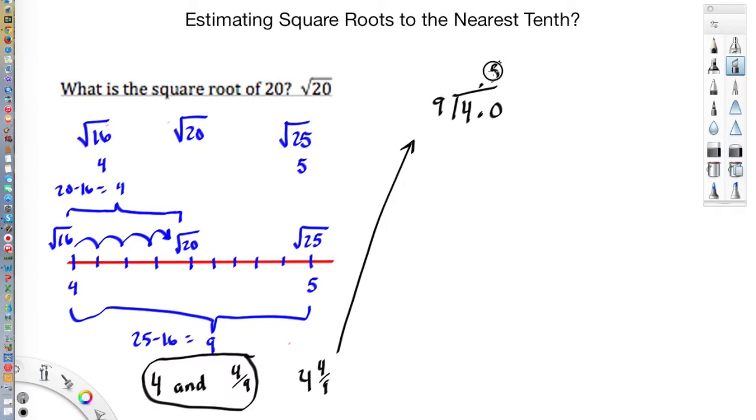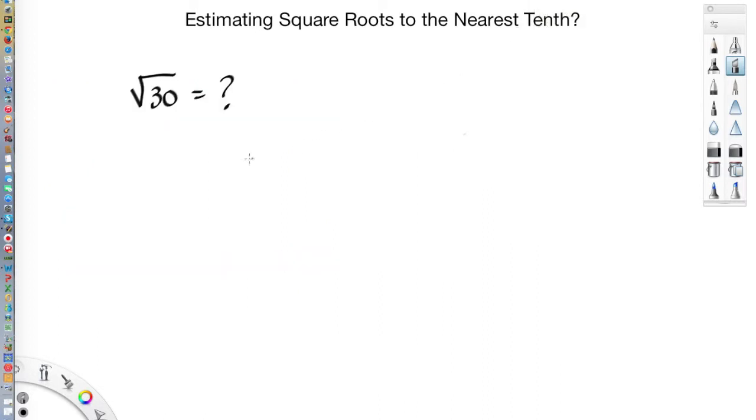It would go into it 4 times, because 4 times 9 is 36. I subtract and I get 4. It's going to be 4 for 4. It's just going to keep on repeating. I bring another zero down. So my answer is 4.4. That is my final answer to the nearest tenth.